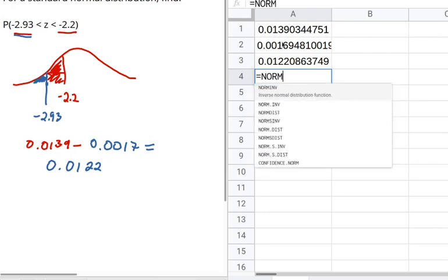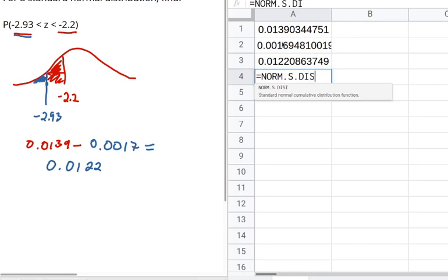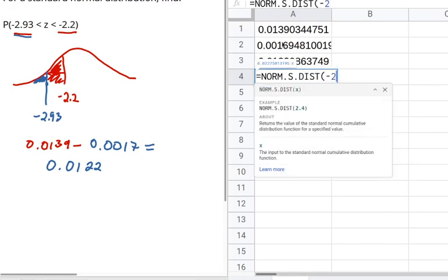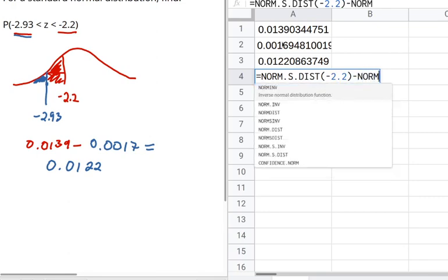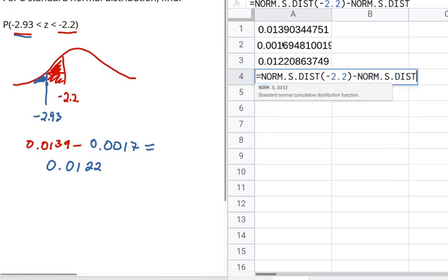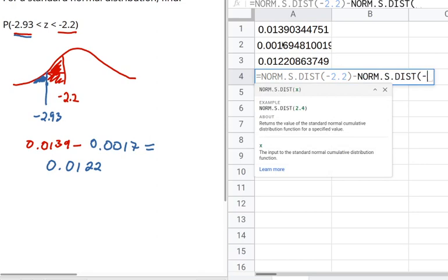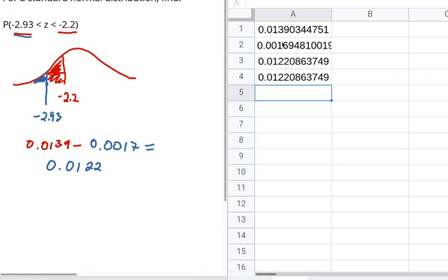So I could say equals NORM.S.DIST of the first one, negative 2.2, minus NORM.S.DIST of the second one, the smaller one, negative 2.93 in my case. And that does it all in one line.